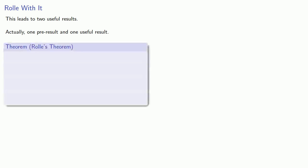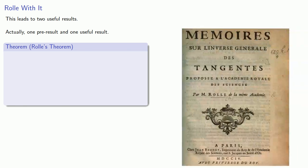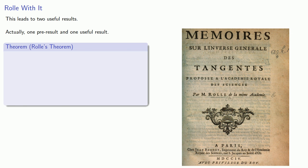So, this leads to two useful results. Actually, one pre-result and one useful result. The pre-result is something called Rolle's theorem. This is named after a French mathematician by the name of Michel... I can't remember his last name. I'll think of it in a moment. Anyway, he discovered the following.